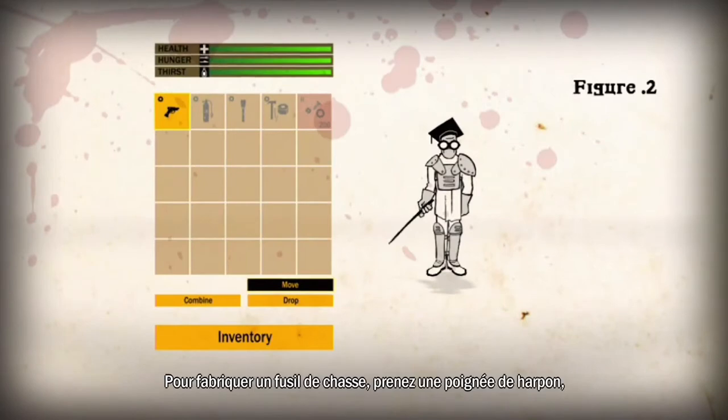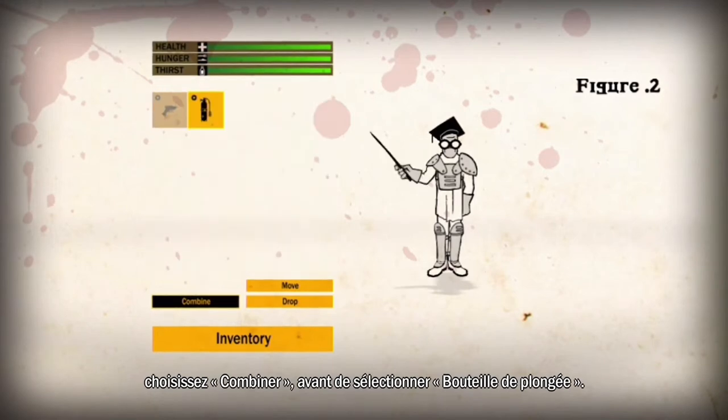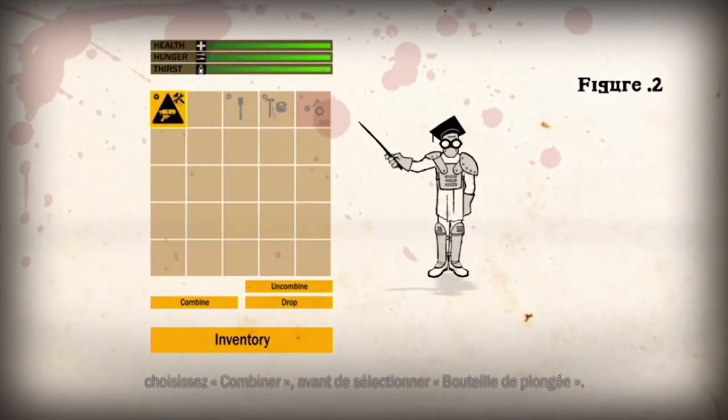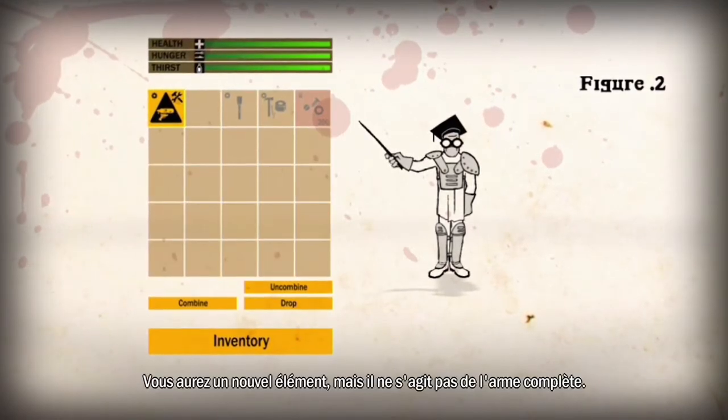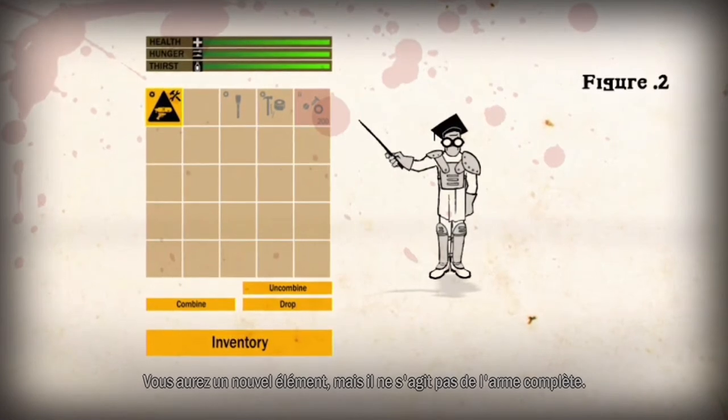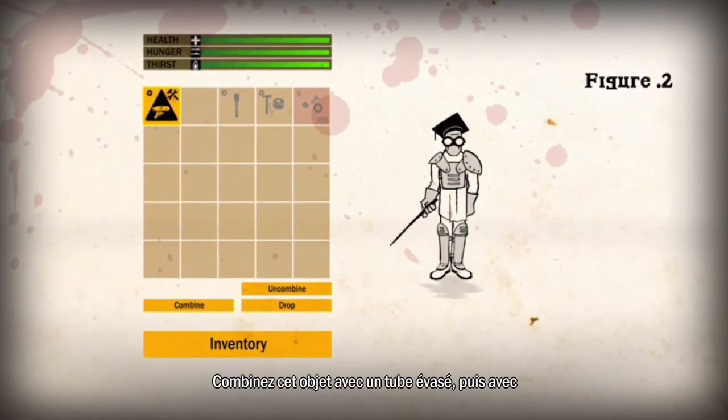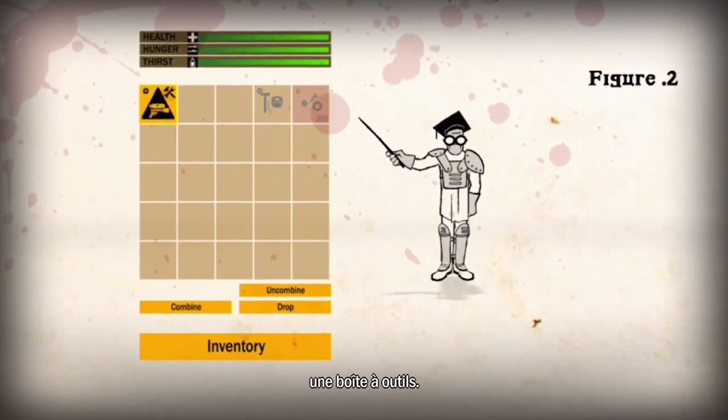To make a shotgun, select a harpoon grip from your stash, choose combine, and select the diving tank. You now have a new item, but it is not a complete weapon. Combine this item with a flared tube and next with a hardware box.